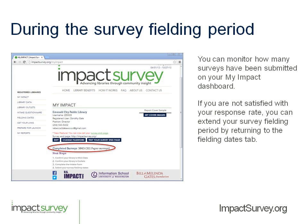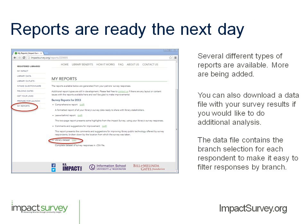During the survey, you can go to your My Impact dashboard and keep track of how many surveys have been submitted. If you're not satisfied with your response rate as you're getting close to the end of your fielding period, and you haven't reached the 4-week maximum, you can extend it by returning to the Fielding Dates tab. If you're at 4 weeks and still want to extend, you'll just need to shoot us an email and we'll unlock that for you. Once your fielding date has closed and you've confirmed all paper surveys are entered, the very next day you can come back to the site and download reports.